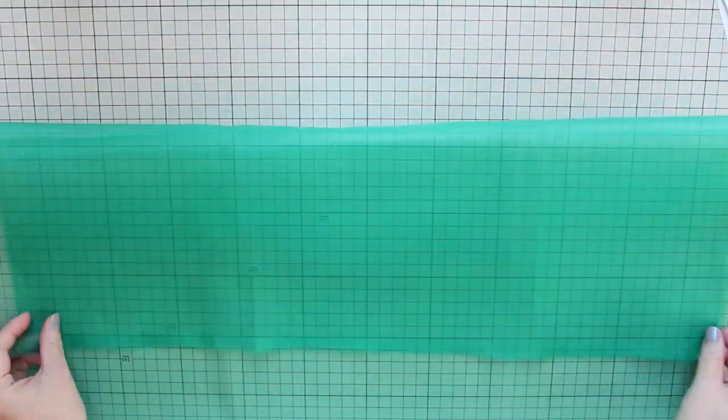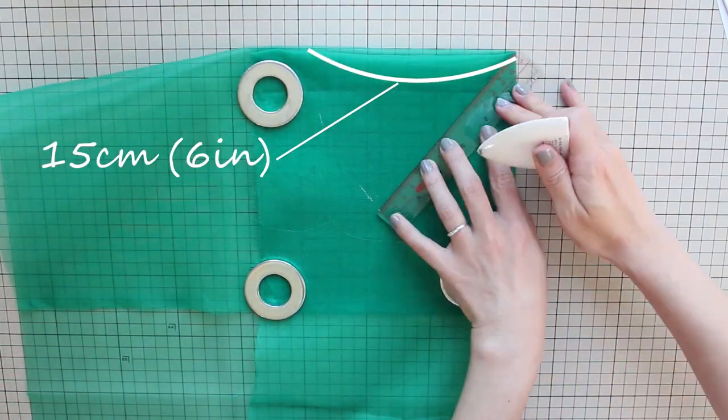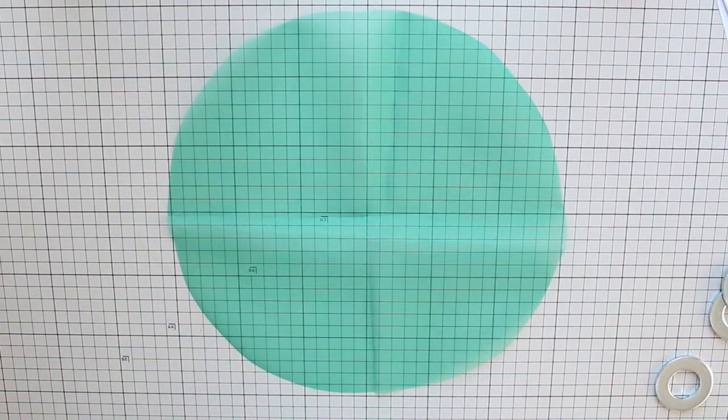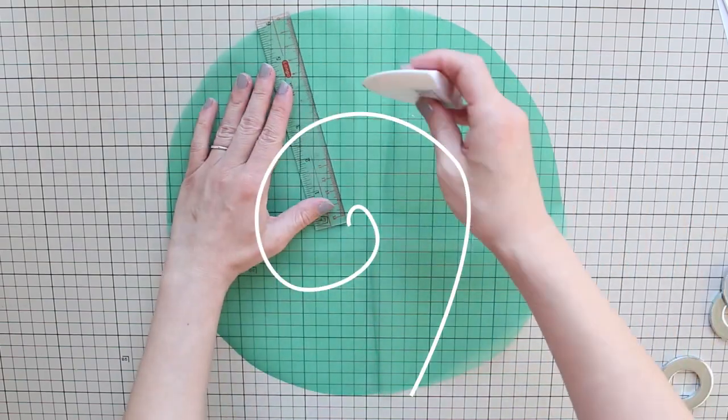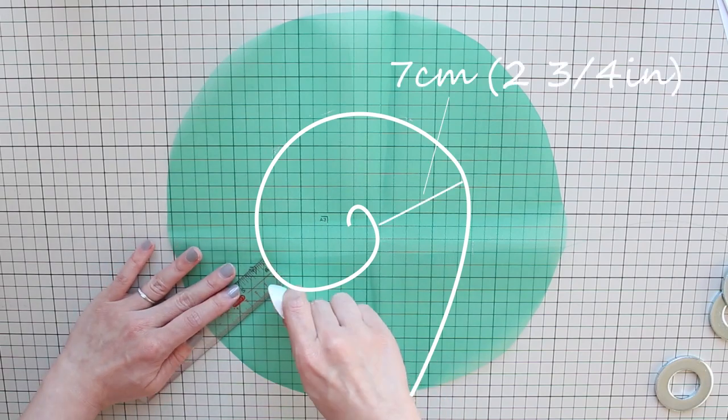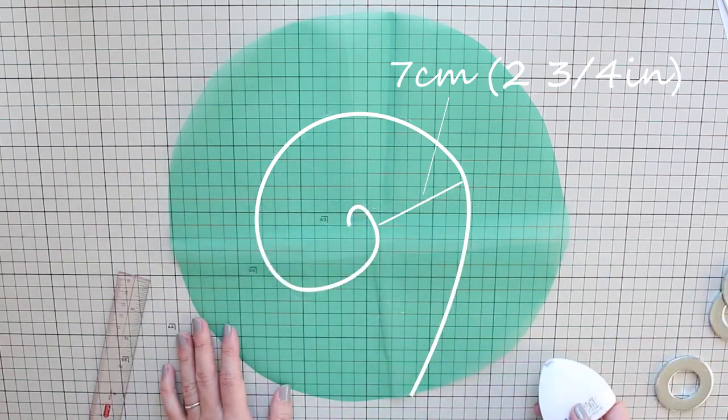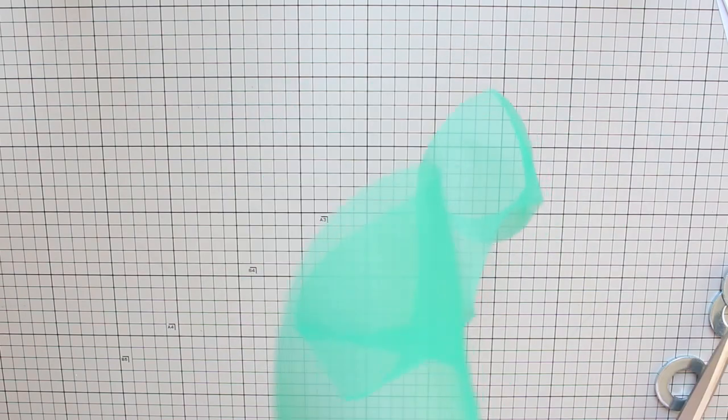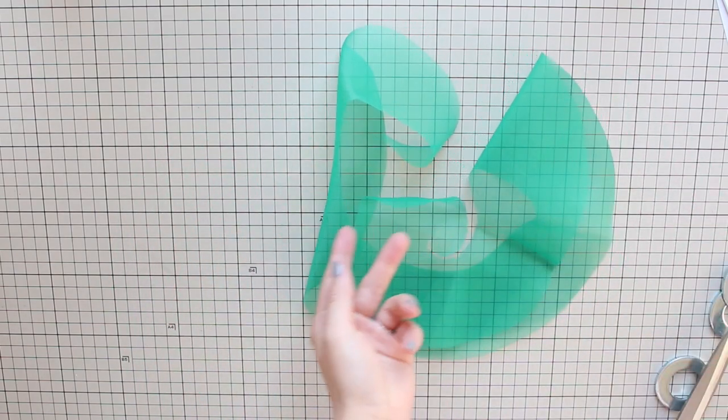First fold your organza twice like this and measure 15 centimeters or six inches from the corner. Cut along the marks and you have a 30 centimeter or 12 inch wide circle. Now draw a swirl from the outer line to the center. I'm keeping the distance between the lines about seven centimeters or two and three quarter inches. Cut along the line and trim off this thick part near the beginning of the swirl. And you have this long curly strip. You can trim it to whatever length you like.